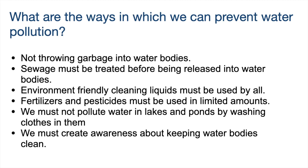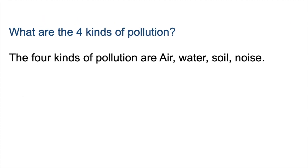What are the ways in which we can prevent water pollution? We should not throw garbage in water bodies. Sewage must be treated before being released into water bodies. Environment-friendly cleaning liquids must be used, and fertilizers and pesticides must be used in limited amounts. We must not pollute water in lakes and ponds by washing clothes in them, and we must create awareness about keeping water bodies clean. The four kinds of pollution are air, water, soil and noise.